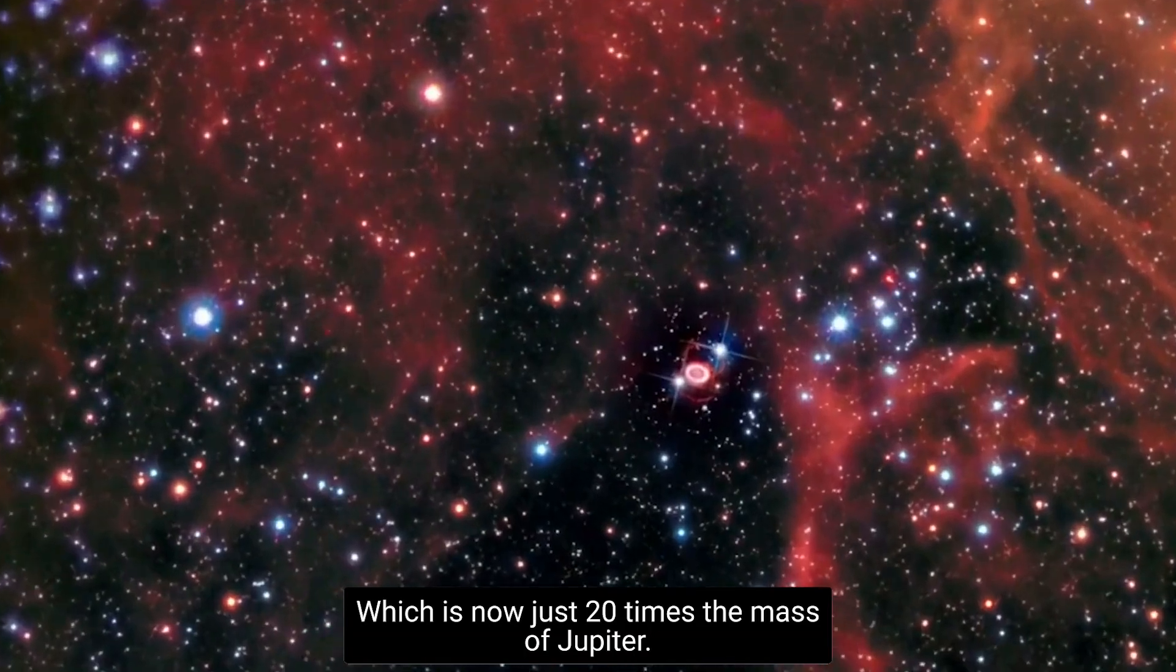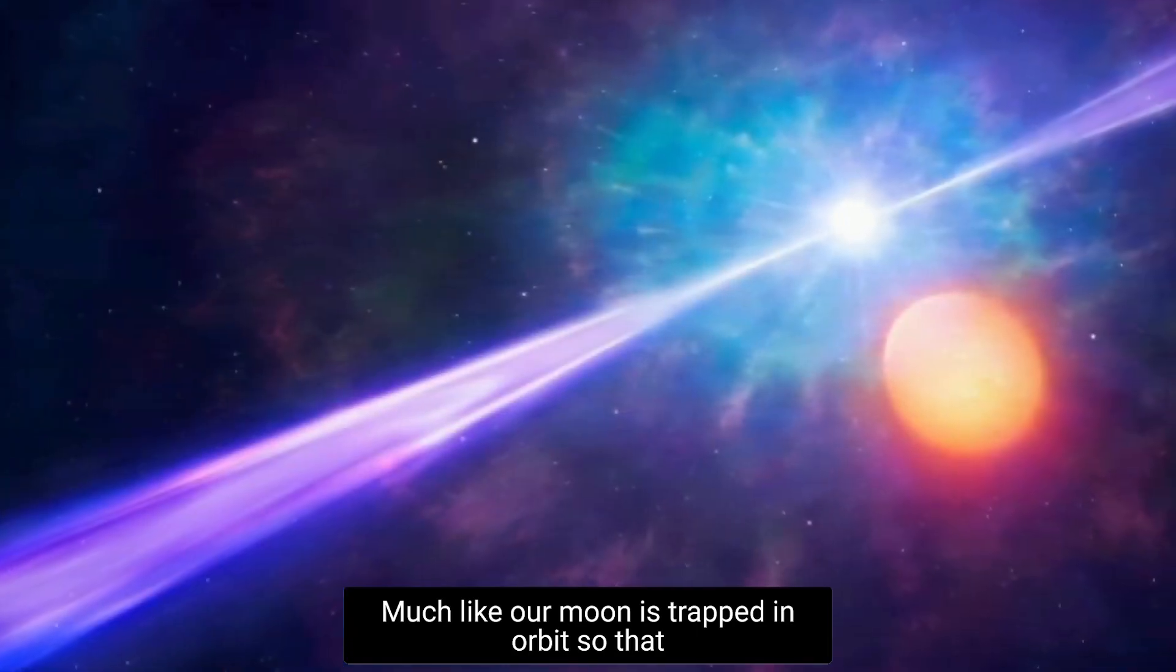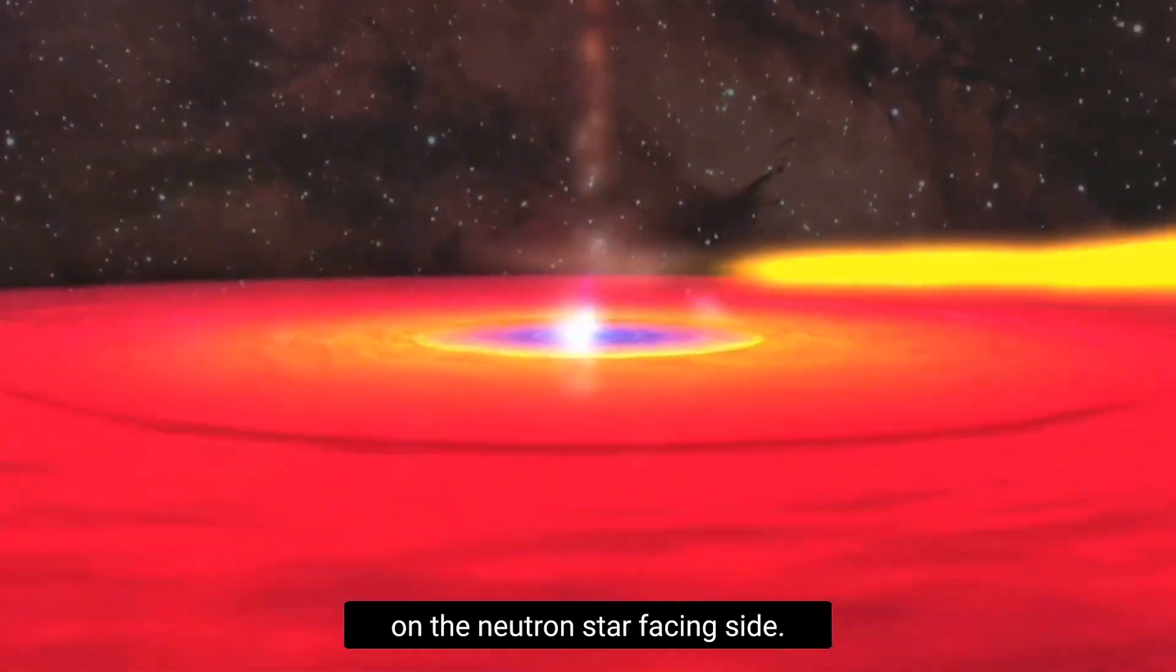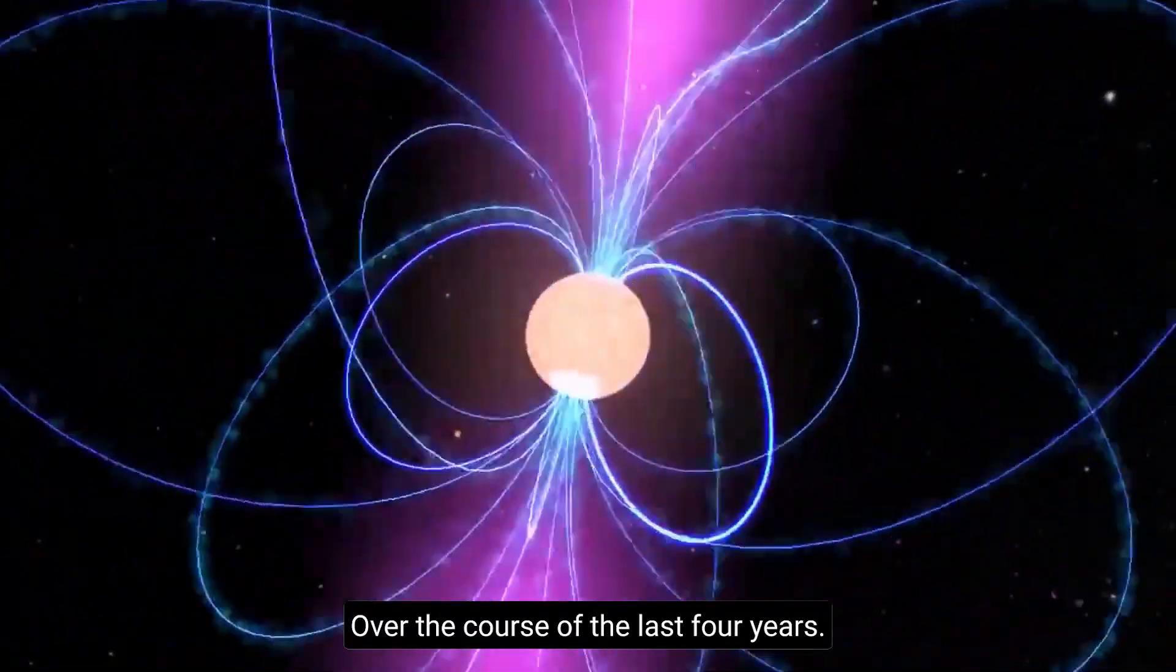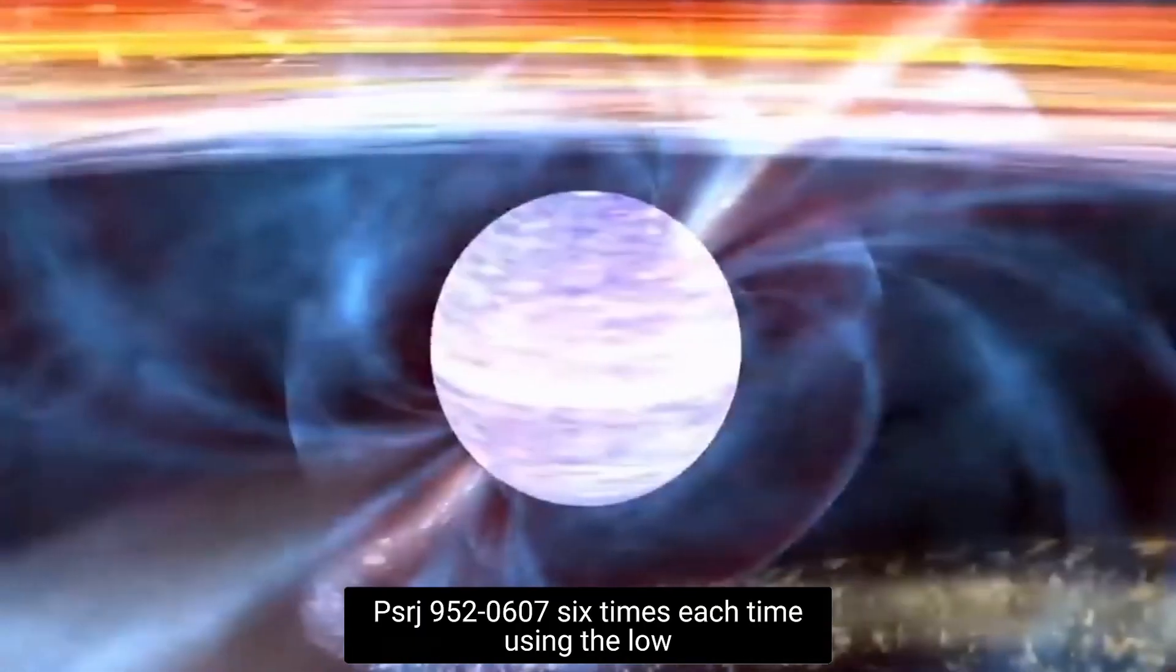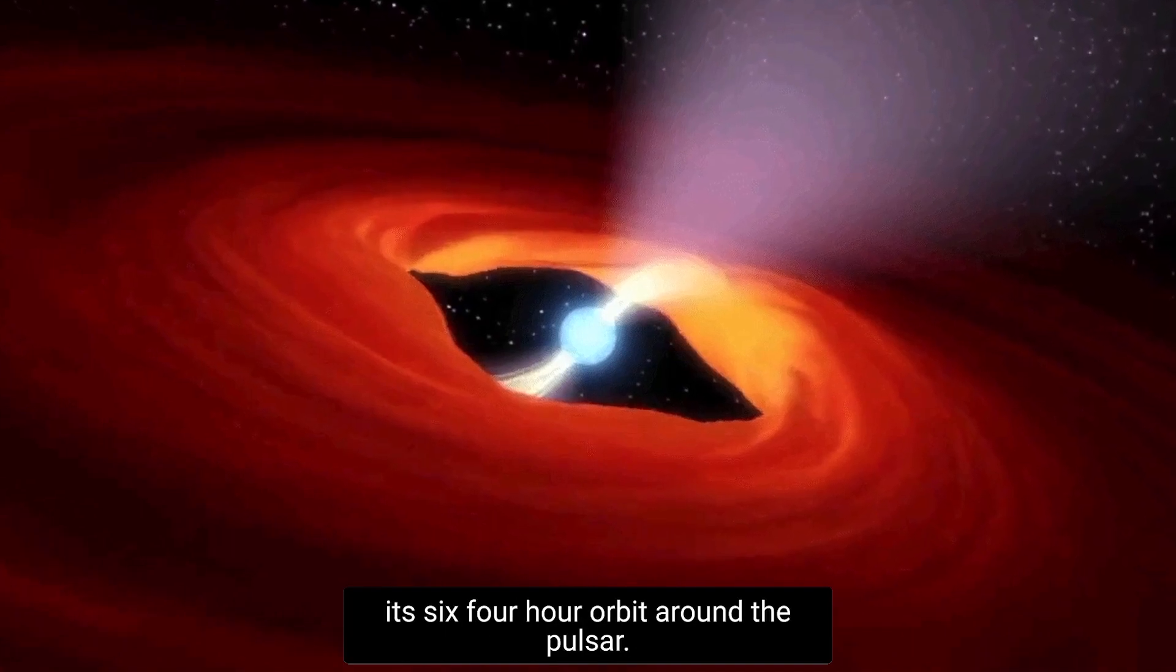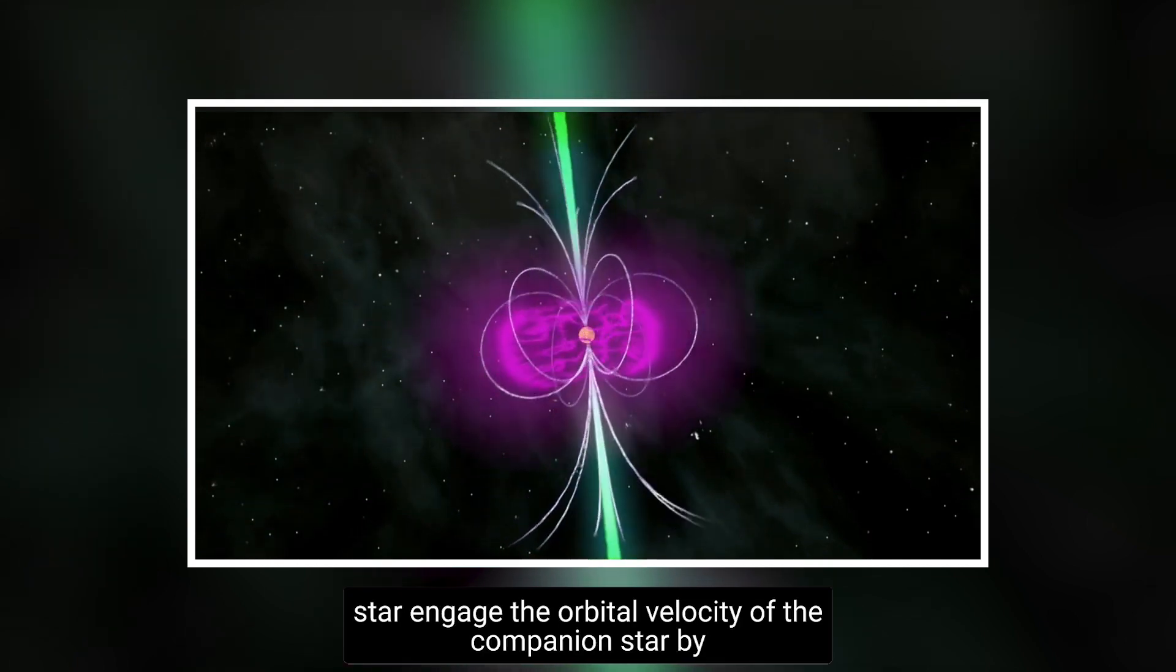The companion star in this binary system, which is now just 20 times the mass of Jupiter, is bent by the neutron star's mass and becomes tidally locked, much like our moon is trapped in orbit so that we can only view one side. About 6,200 kelvin or 10,700 degrees Fahrenheit are reached on the neutron star facing side, making it slightly hotter than the sun and just brilliant enough to be visible through a powerful telescope.